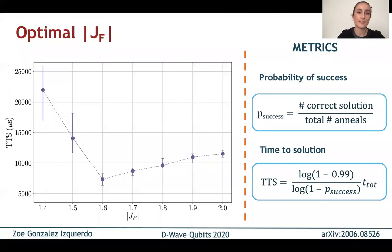We first look at the standard anneal without a pause and try to find the optimal jferro. So we're going to use two different metrics. The first one is the probability of success or p-success, and the second one is the time to solution or TTS. The probability of success describes how often the correct solution is found. So it's just the number of times we find the correct solution over the total number of times we run the problem. And it is useful because it tells us how good the parameters we're using are at solving the problem.